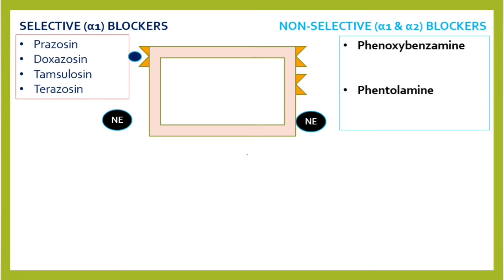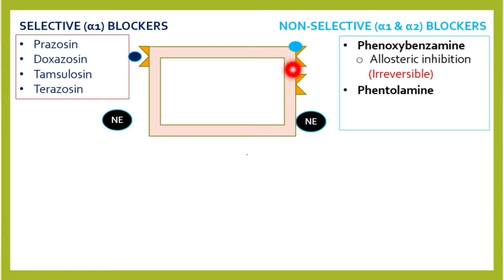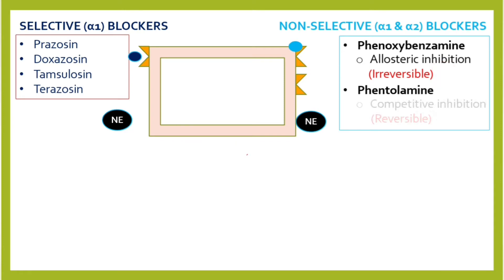Non-selective alpha-1 and alpha-2 blockers include phenoxybenzamine and phentolamine. Phenoxybenzamine is actually an allosteric inhibitor — it does not attach on the active site but on an allosteric site. There will be deformation of the receptor, so if epinephrine comes, no effect will be induced. It is an irreversible allosteric inhibitor.